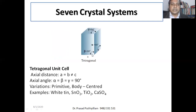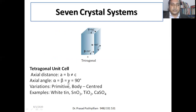For tetragonal unit cells: two axial distances are equal but the third is not — a = b ≠ c — and the axial angles are all 90°: α = β = γ = 90°. There are two variations: primitive and body-centered. Examples include white tin, tin oxide, titanium dioxide, and zircon sulfate.